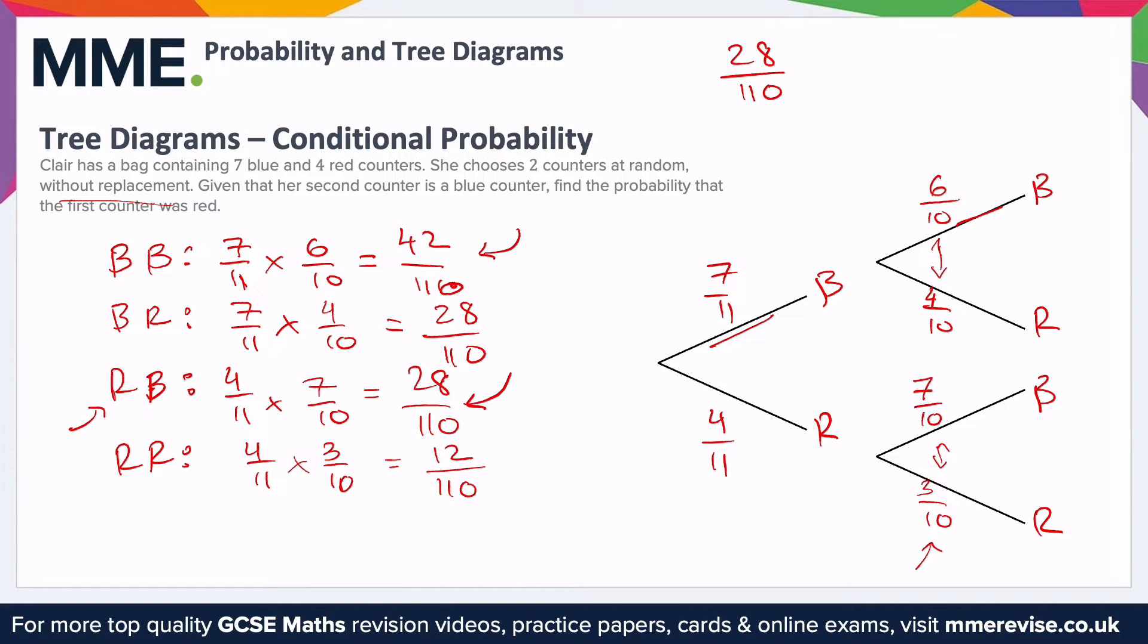Then we need to figure out the total number of ways that we can have a blue as the second counter, which is this one and this one. So on the bottom, you'd have 42 over 110 plus 28 over 110.